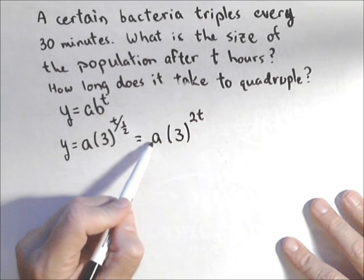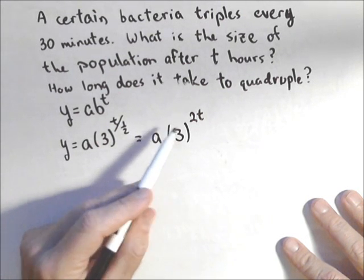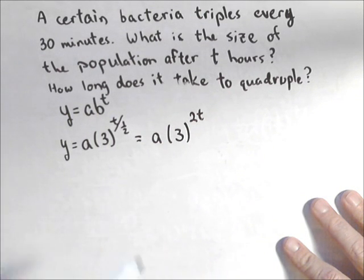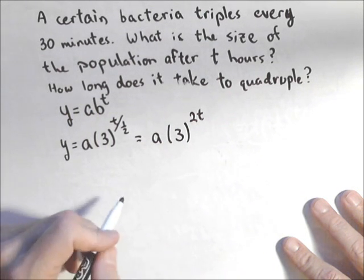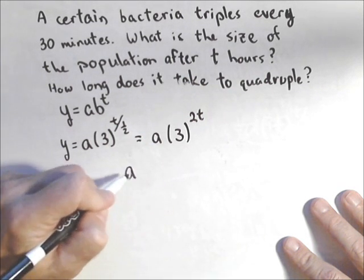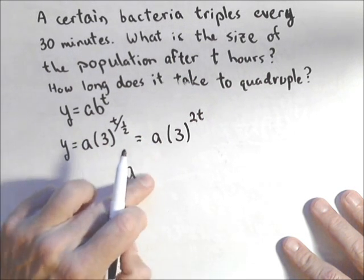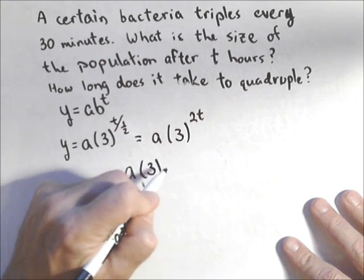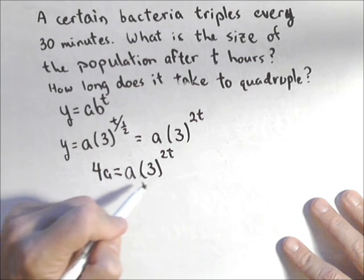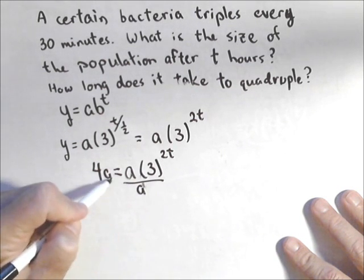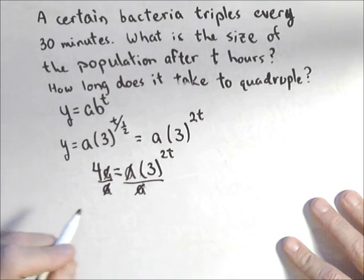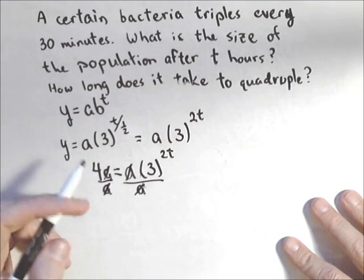Now, if we knew our initial, we could create our model. Our goal is to figure out how long it takes to quadruple. We don't need to know an initial amount to know that. Because if we start off with a, I wanna find out how long it's gonna take to get up to four a. So first thing I'm gonna do is divide both sides by a, because four a is quadruple a, and I get something that no longer involves a.